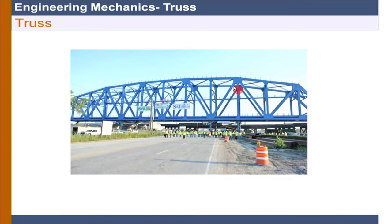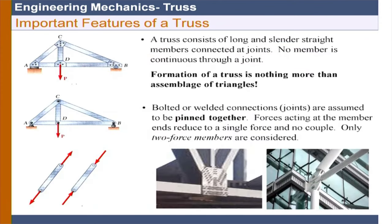There are two aspects: one is the simple analysis that we are going to learn, and also we can make it very economical compared to frame structures. Frame structures will have a lot of complicated analysis and we have to worry more about the moment being taken - sometimes sections are designed very heavily. Let us go through the important features of a truss.